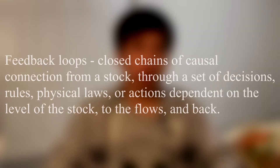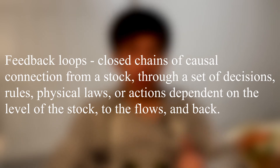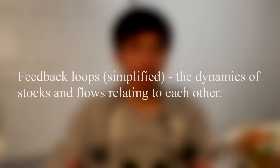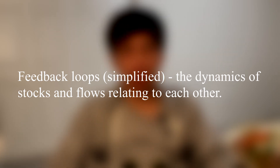From this, we can take a look at different feedback loops. To give a more rigorous definition, they are closed chains of causal connection from a stock through a set of decisions, rules, physical laws, or actions dependent on the level of the stock — to the flows and back again. They capture the dynamics of the differences between the stocks and flows and how they relate to each other. Feedback loops generally come in two varieties: balancing (or negative) and reinforcing (or positive).